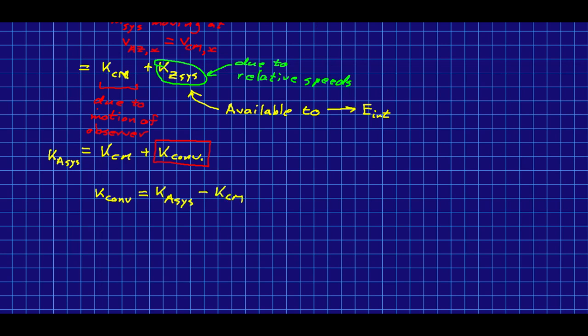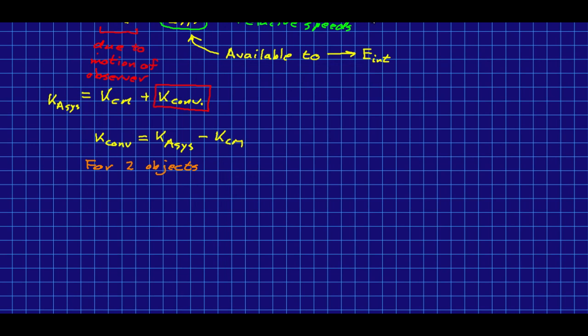Now, to simplify things, I'm going to specialize to the situation of just two objects in the system. We can do this for more, but the algebra gets much nastier.